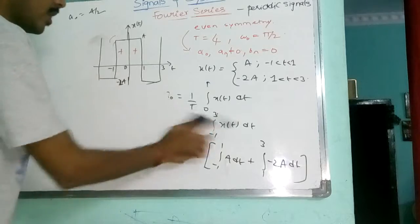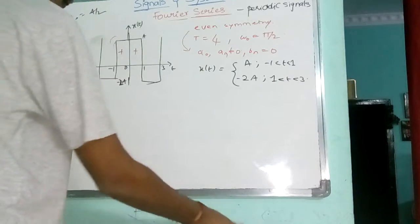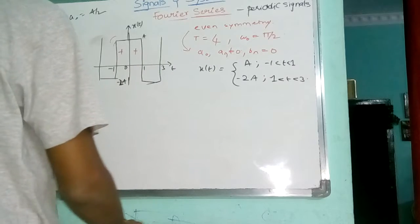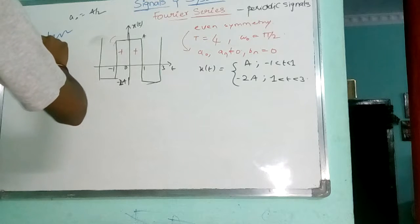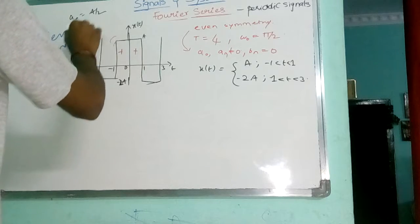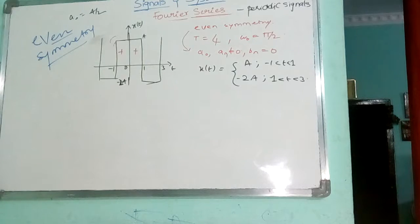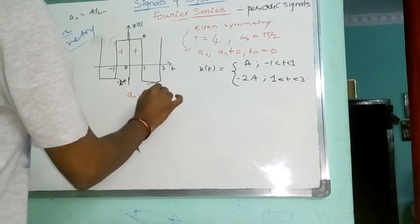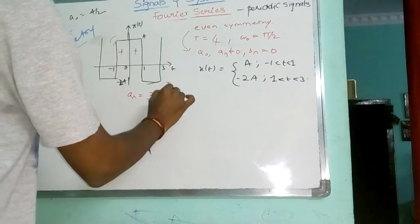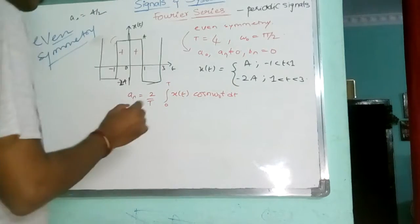These both are non-zero. This is a real symmetric polynomial. Now, I need to calculate A N. A N has: 2 by T, integrate 0 to T, x of T, cos N omega 0 T, DT. That means, 2 by 4, integral 0 to 4, x of T, cos N omega 0 T, DT.